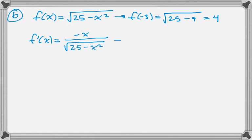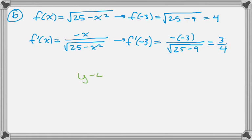So we get that, and f'(-3) will be negative of negative 3 over square root of 25 minus 9, and that gives us 3/4. Then we write the equation in point-slope form, and we'll be on to the next part. And there you go.